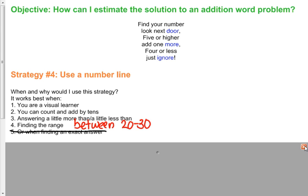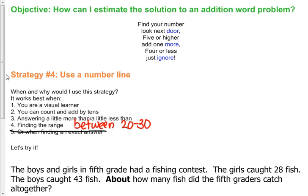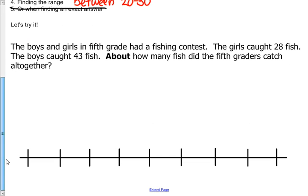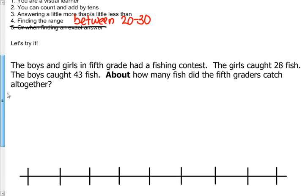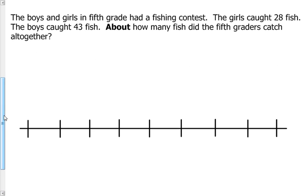So we're going to try each of these with this question. It reads: The boys and girls in fifth grade had a fishing contest. The girls caught 28 fish. The boys caught 43 fish. About how many fish did the fifth graders catch all together? As you practice, the first thing we do is circle our numbers and underline our keywords. About means to round. All together means to add. You might even want to put this in your connection to prior knowledge because I'm sure many of you have remembered this for the past three days.